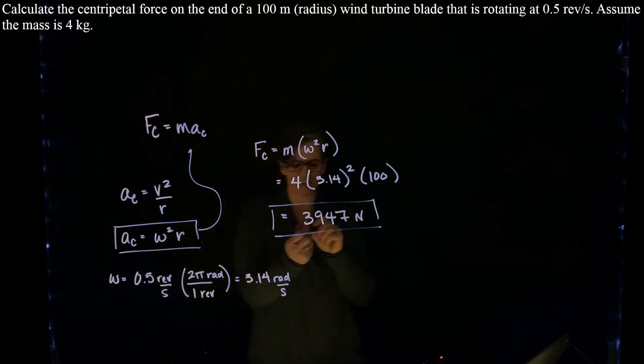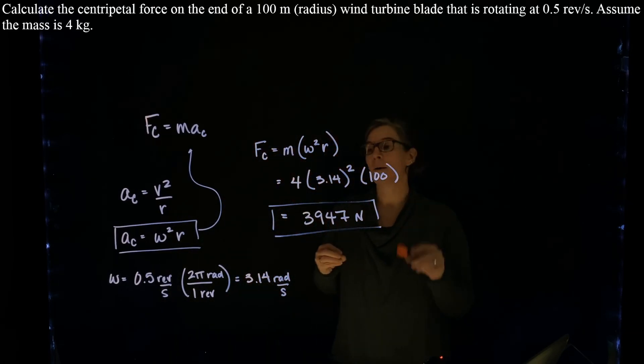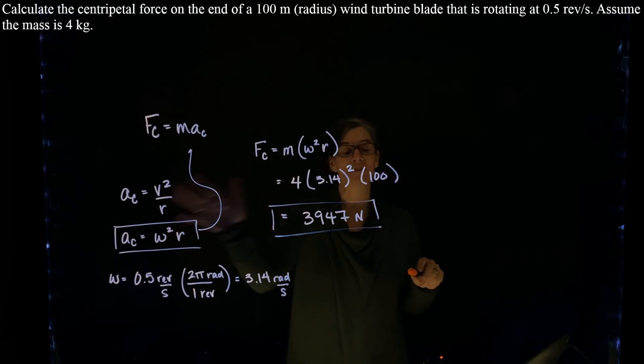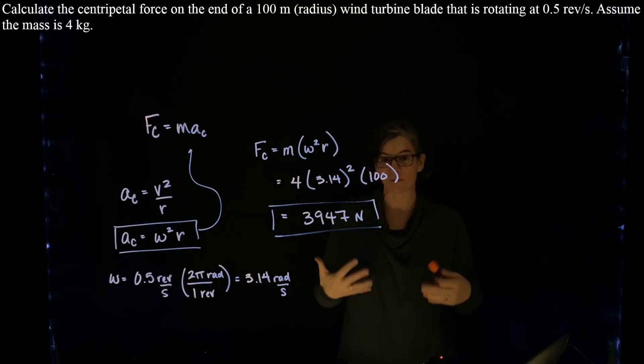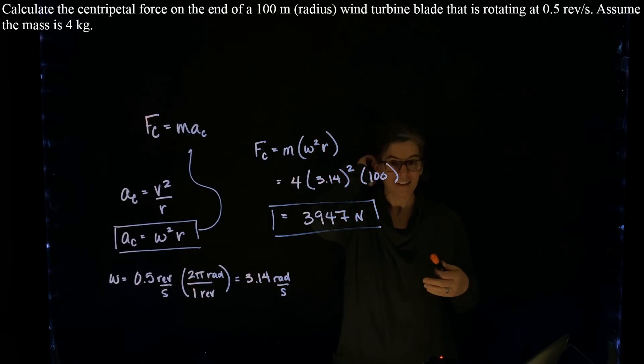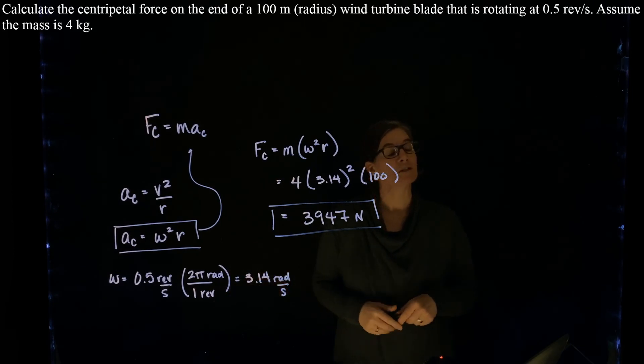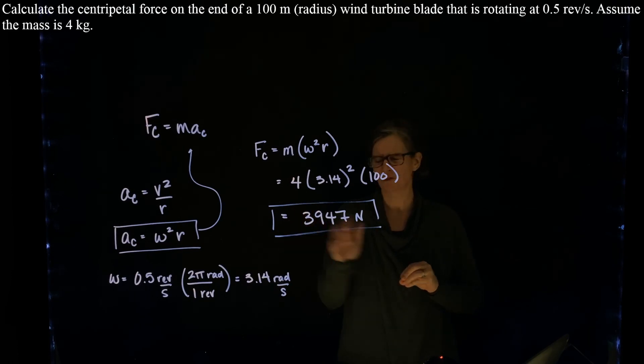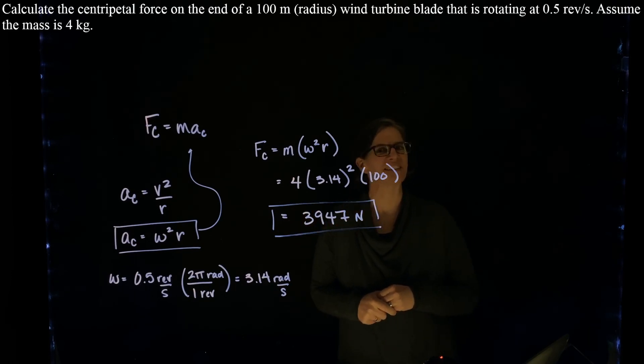So recognizing that we're looking for centripetal force on that 4 kilogram rotating blade, we have two ways to determine the centripetal acceleration. We've determined that we have a relationship for angular speed, so we're going to use that second determination. We need to recognize that angular velocity has to be in radians per second, do that conversion, and then use our relationship. All right, good job.